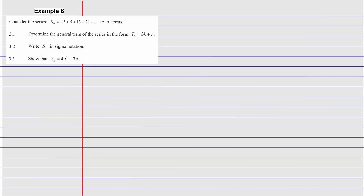Now let's do this question. It says: consider a series where n equals negative 3 plus 5 plus 13 plus 21, up to n terms. Part 3.1 says determine the general term — they're looking for t_n of the series in the form of t_k.